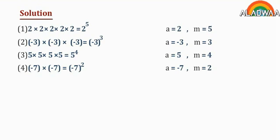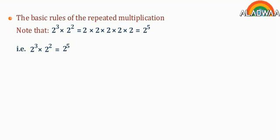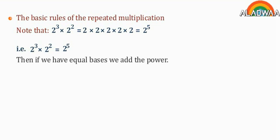The basic rules of repeated multiplication. Note that 2 to the power of 3 times 2 to the power of 2 equals 2 times 2 times 2 times 2 times 2, which equals 2 to the power of 5. Then, if we have equal bases, we add the powers. If a belongs to Z, a not equal to 0, and m and n also belong to Z, then a to the power m times a to the power n equals a to the power m plus n.